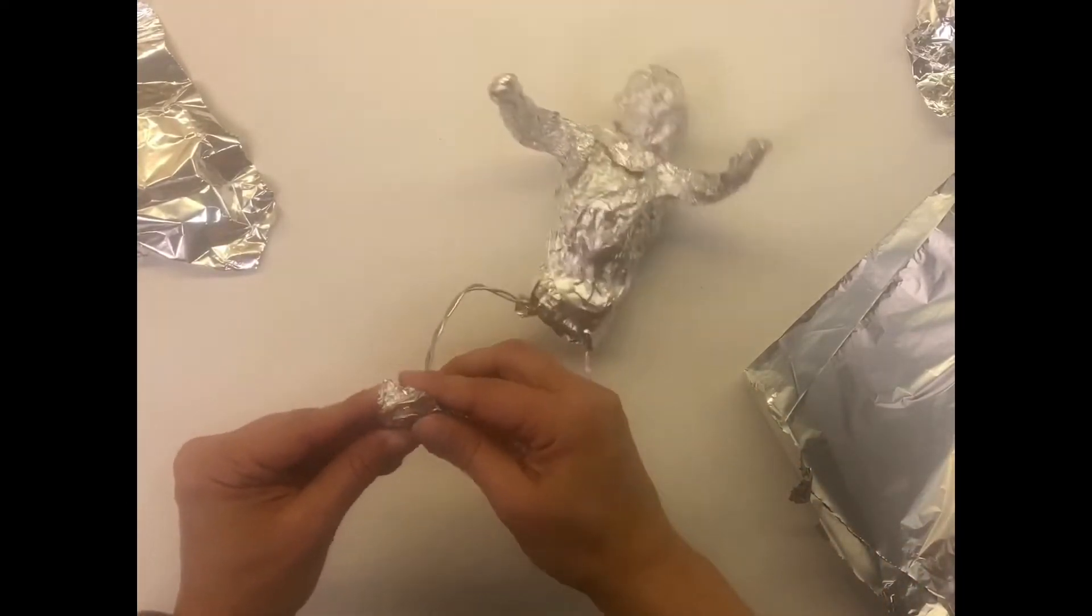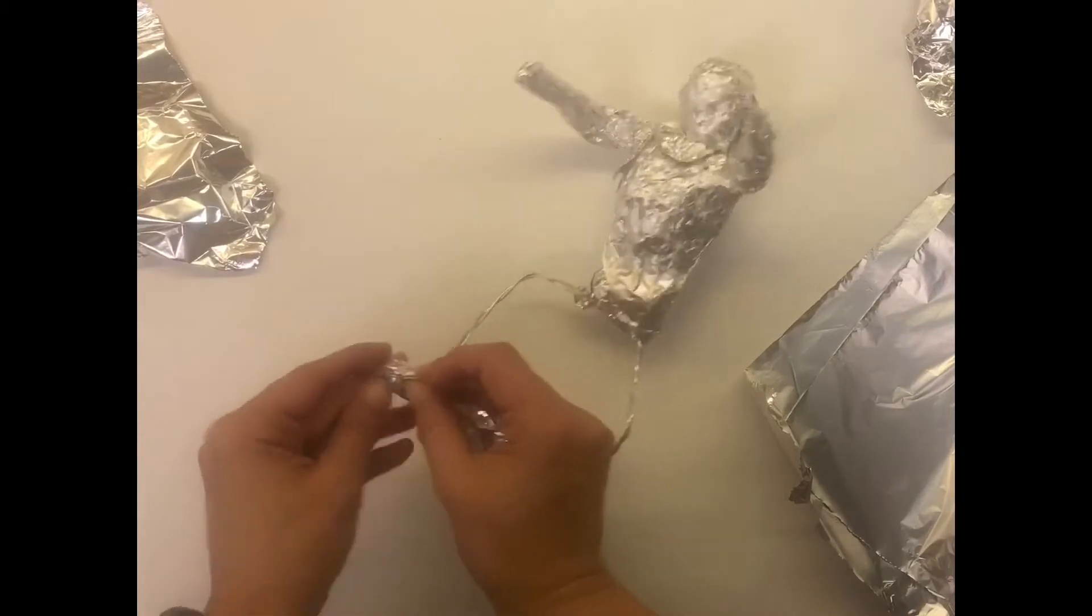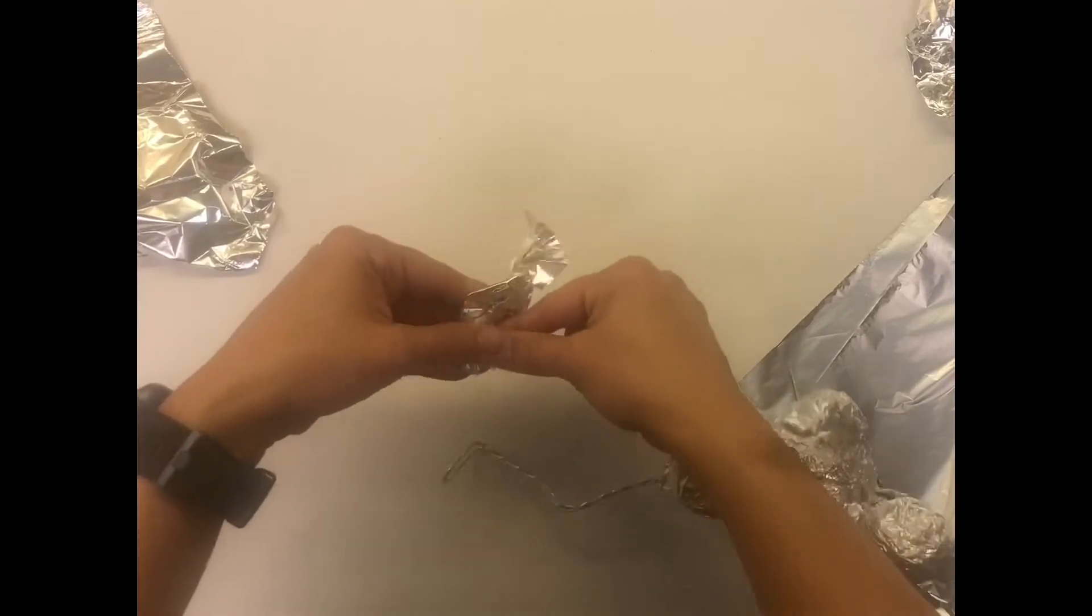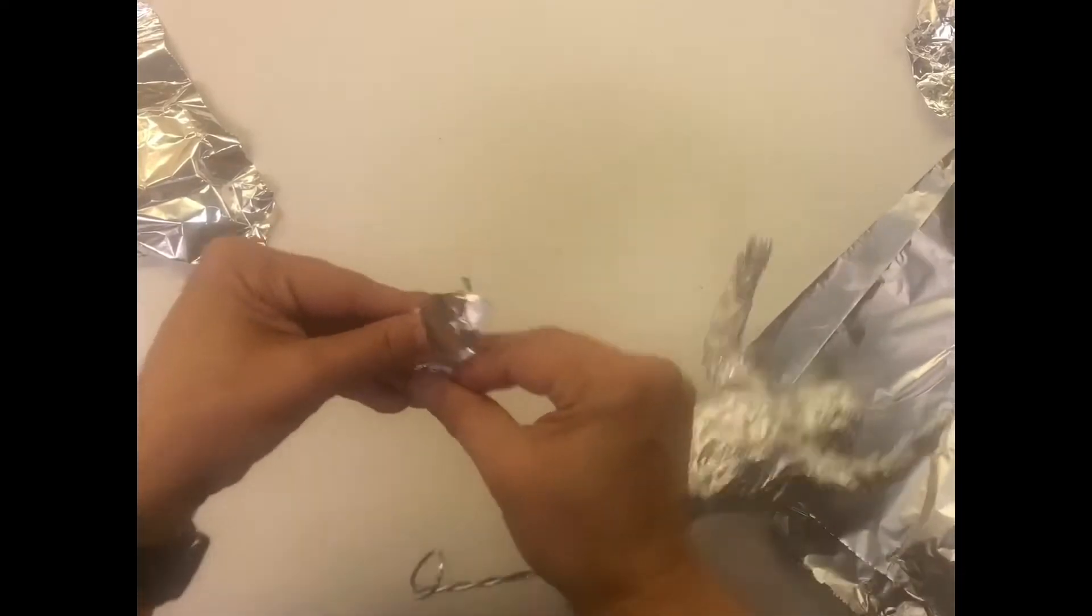And I lay it either on top of or through the loop that we made for the shoe. And then I take that tail of foil and I wrap it around.